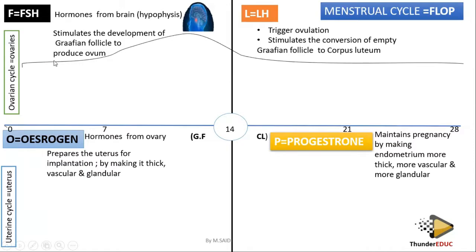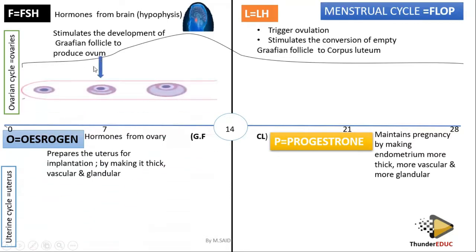Now let's see how these hormones actually work. We start with follicle-stimulating hormone. When follicle-stimulating hormone increases, it stimulates the Graafian follicle to develop and produce the ovum. So as FSH starts to increase, the Graafian follicle also starts to develop — before it increased, the Graafian follicle was almost the same size.